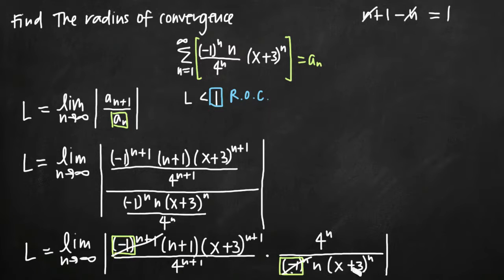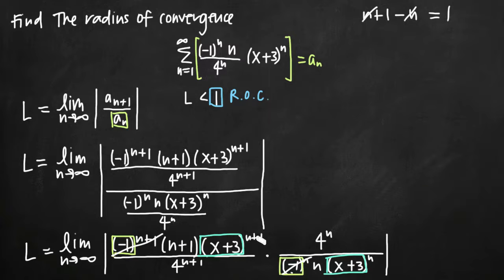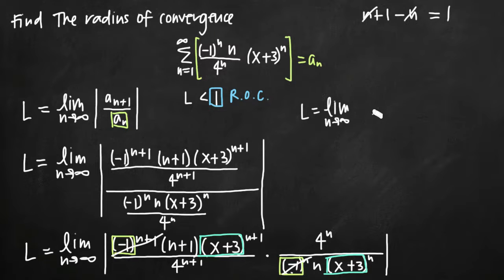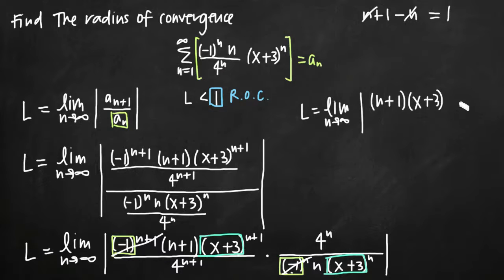The quantity n plus 1 doesn't have anything to cancel with in the denominator, so it stays. For x plus 3, we have x plus 3 raised to the n plus 1 in the numerator and x plus 3 raised to the n in the denominator — the same base. Taking n plus 1 minus n leaves positive 1, so we're left with x plus 3 to the first power in the numerator. We're now writing: L equals the limit as n approaches infinity, with quantity n plus 1 and x plus 3 in the numerator.